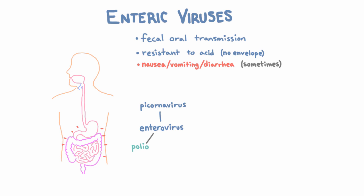There are a lot of other enteroviruses, which we often call the non-polio enteroviruses. This group includes echoviruses and Coxsackievirus, and there are many, many types of each of these. All of them replicate in the GI tract, but like poliovirus, they can also do a lot of other things, infecting different cells in your body.